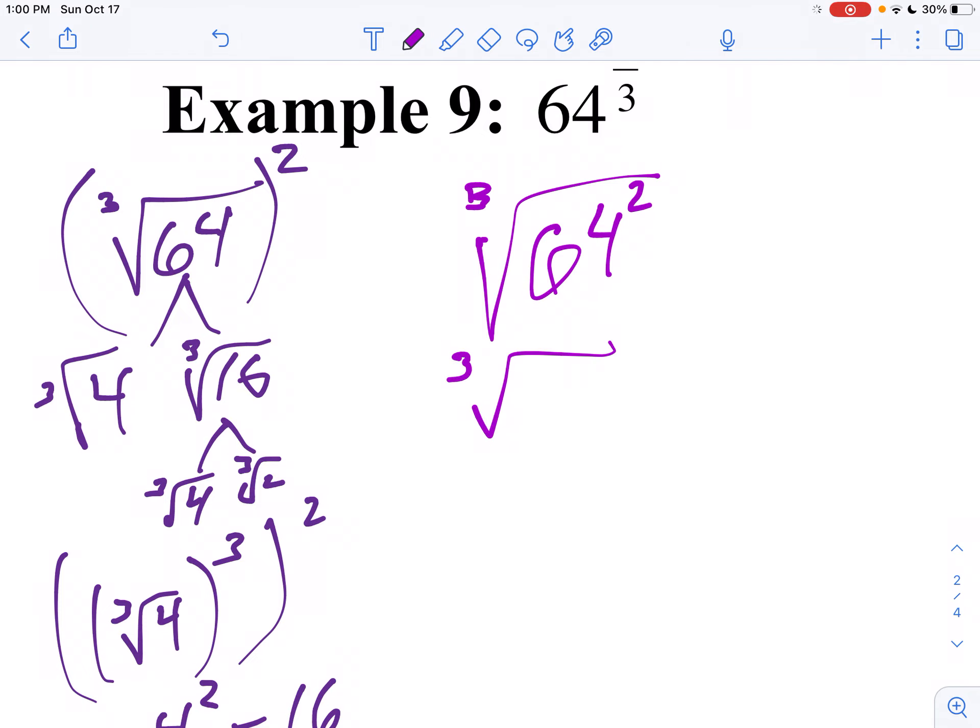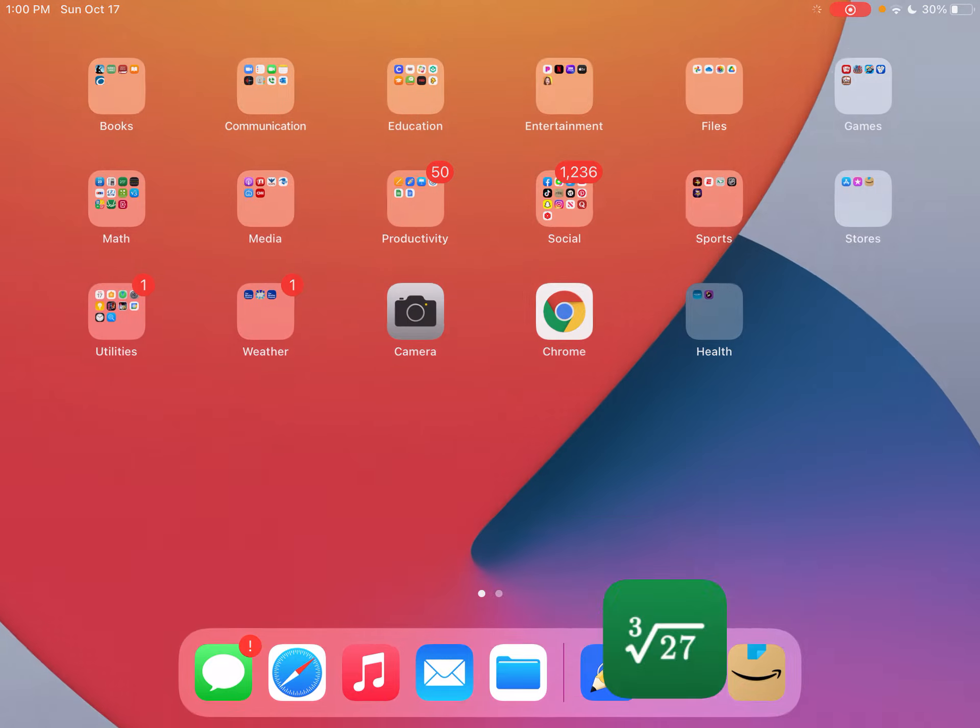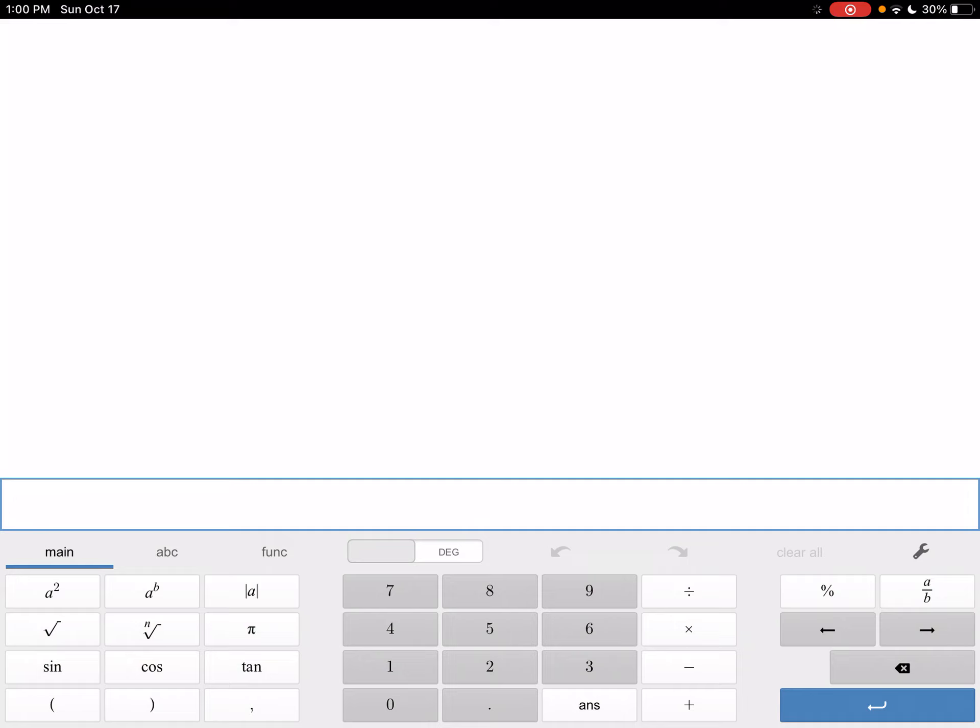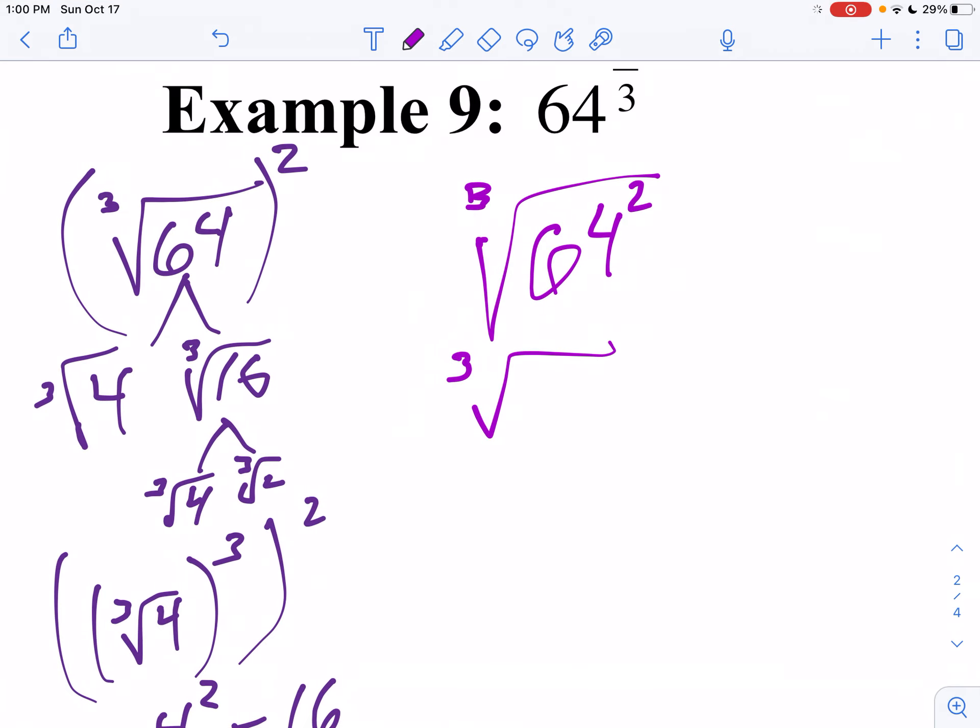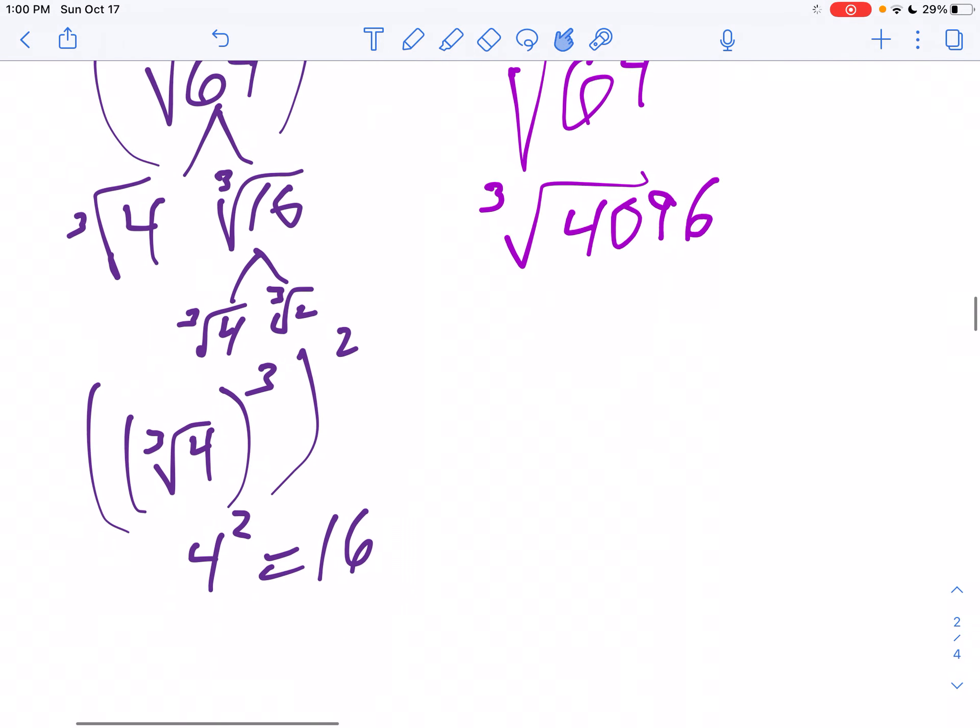So now what I'm going to do is I'm going to take 64, I'm going to square that. We'll use our calculator for that, so I take 64 and I'm going to square it, and 64 squared is 4096. So I'm going to get 4096 and that's the issue I have. Now I got to take the cube root of 4096.